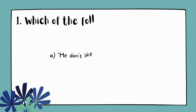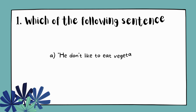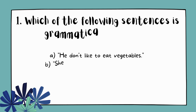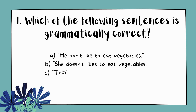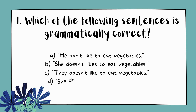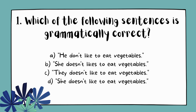Question 1. Which of the following sentences is grammatically correct? A. He don't like to eat vegetables. B. She doesn't likes to eat vegetables. C. They doesn't like to eat vegetables. D. She doesn't like to eat vegetables.